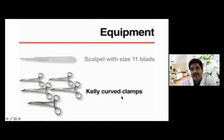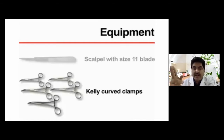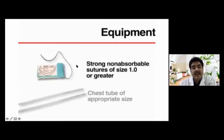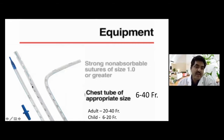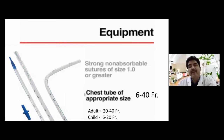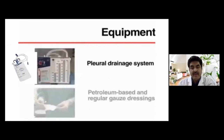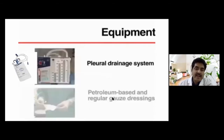A Kelly clamp is very important. If unavailable, you may use a medium-sized straight artery forceps. For fixation, you can use silk or prolene as a non-absorbable material. You need a standard chest drain tube — these come in different sizes and shapes: straight flexible silicone tubes and right-angle tubes, ranging from 6 to 40 French. For adults, 20 to 40 French is preferred; for children, 6 to 20 French.